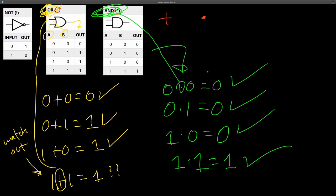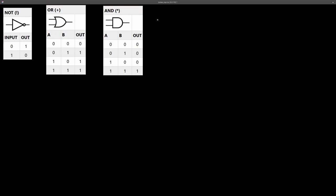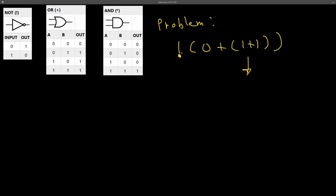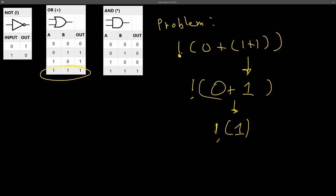Let's start combining operations together. Here we have the problem NOT(zero OR (one OR one)). To solve this we start from the inner parentheses: one OR one is one, then zero OR one is one, and then NOT of one is zero — that is our final answer.